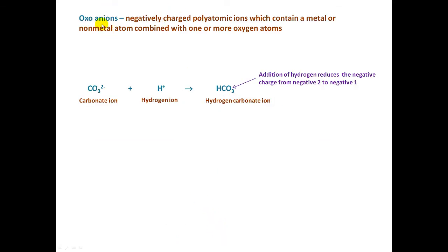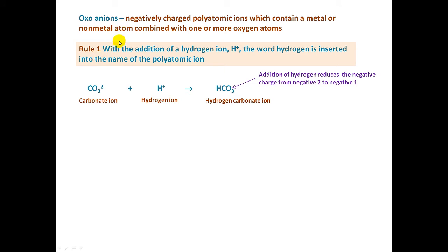Let's get back to the oxoanions. Oxoanions are negatively charged polyatomic ions which can contain a metal or a non-metal atom combined with one or more oxygen atoms. Let's look at rule number one. We're going to have four simple rules that we need to follow, for deriving other polyatomic ions and acids from the list of polyatomic ions in the table.